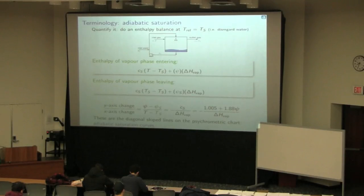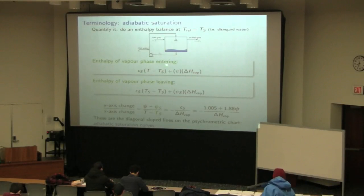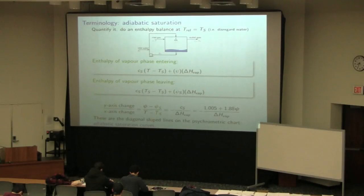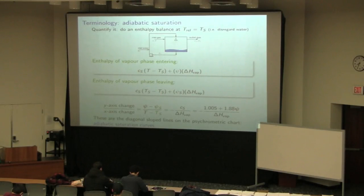In the last class, we started doing an enthalpy balance around the system. We take the enthalpy coming in from the incoming gas: that's the temperature T multiplied by the heat capacity C_s — defined for a vapor-air mixture. Our reference temperature was chosen as T_s, so the driving term is T minus T_s. This choice lets us disregard the liquid water in the system, since water stays at T_s throughout that cycle.